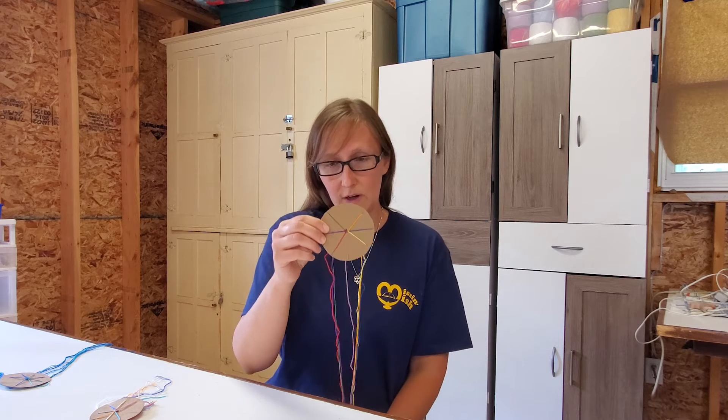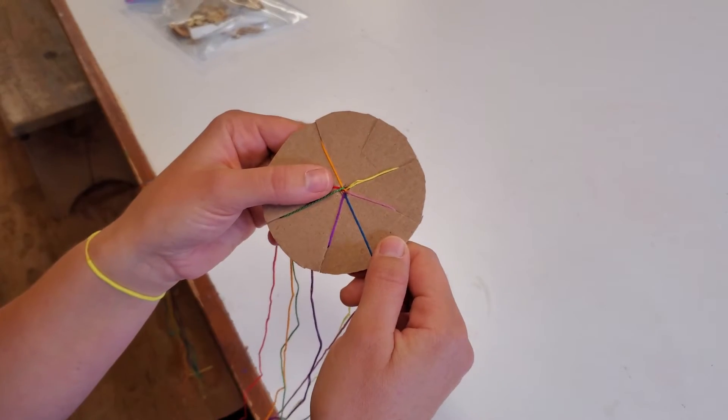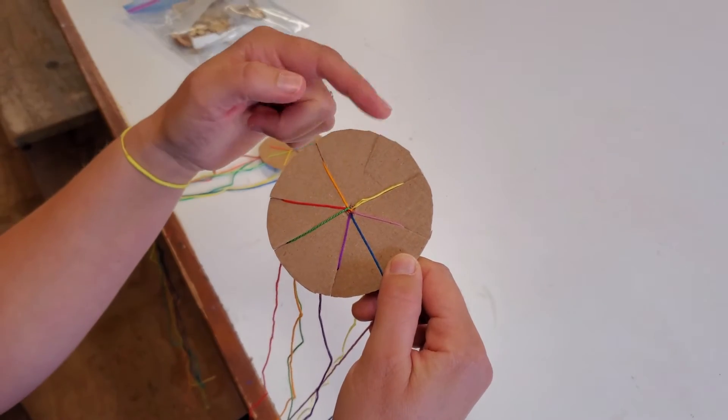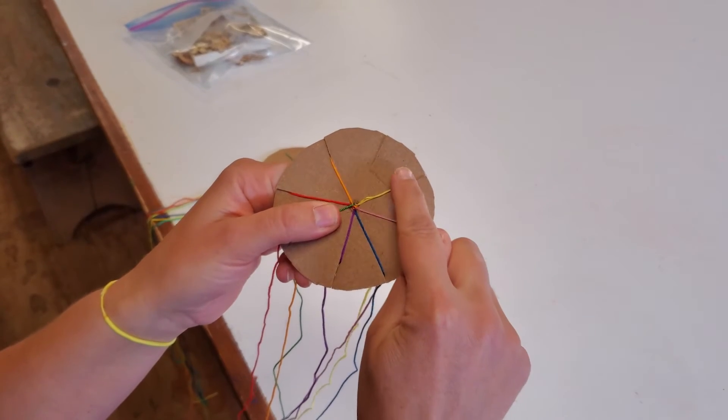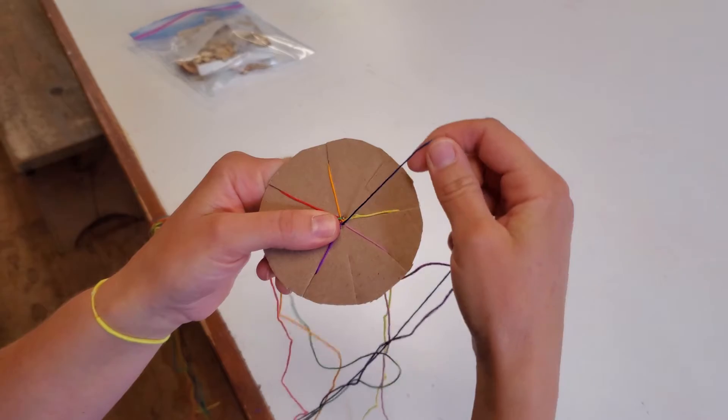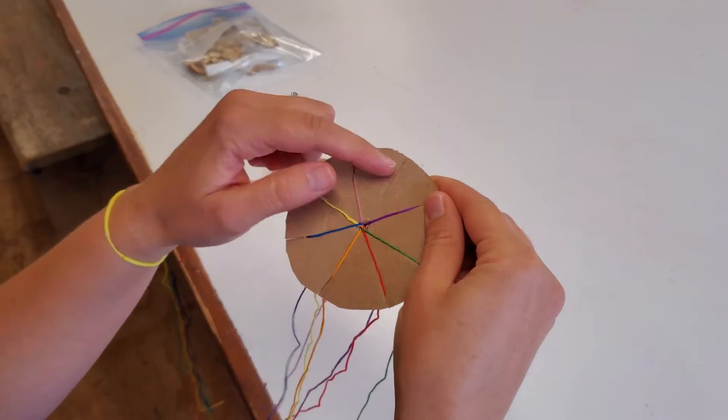Once you've done that, you'll notice that you have seven strings with one empty spot. I like to think of my circle as a clock and I put my empty slot up here at 12 o'clock, and then I count to the right: one, two, three. That third string I move up to the empty slot.